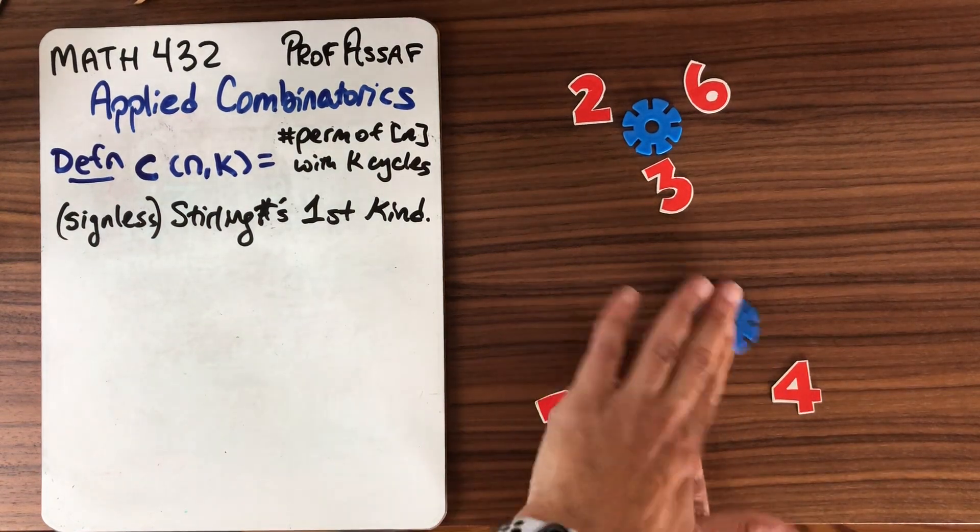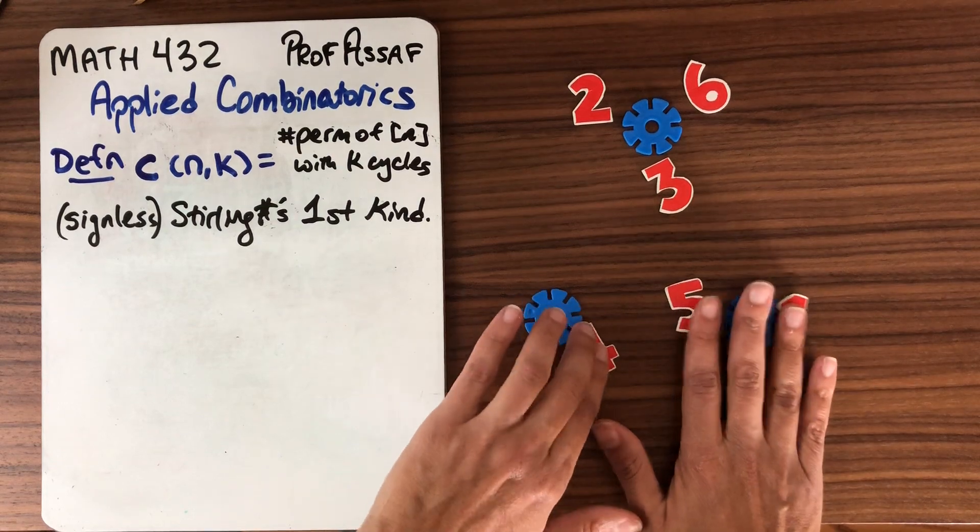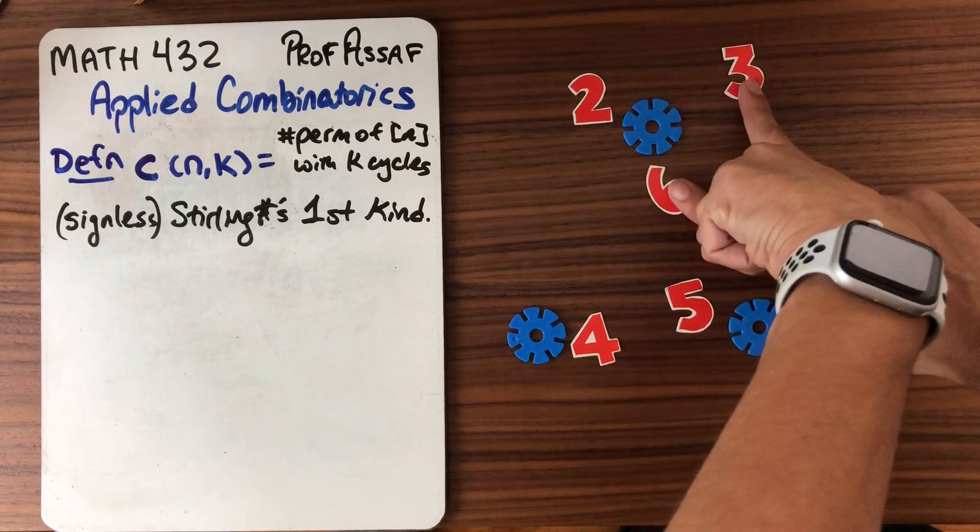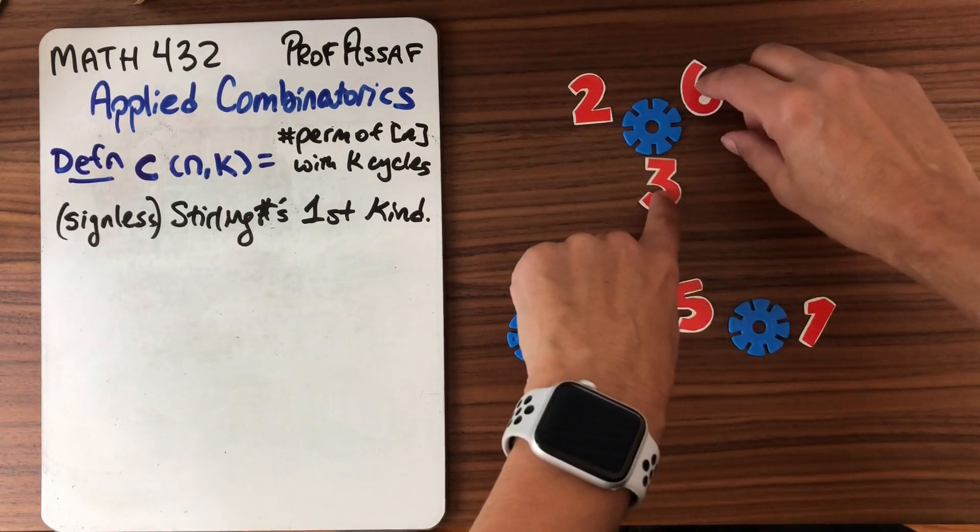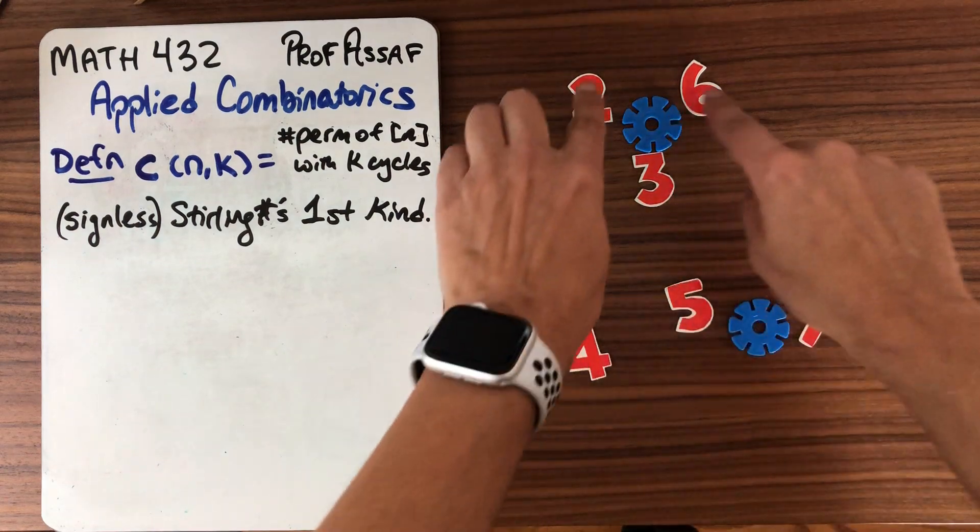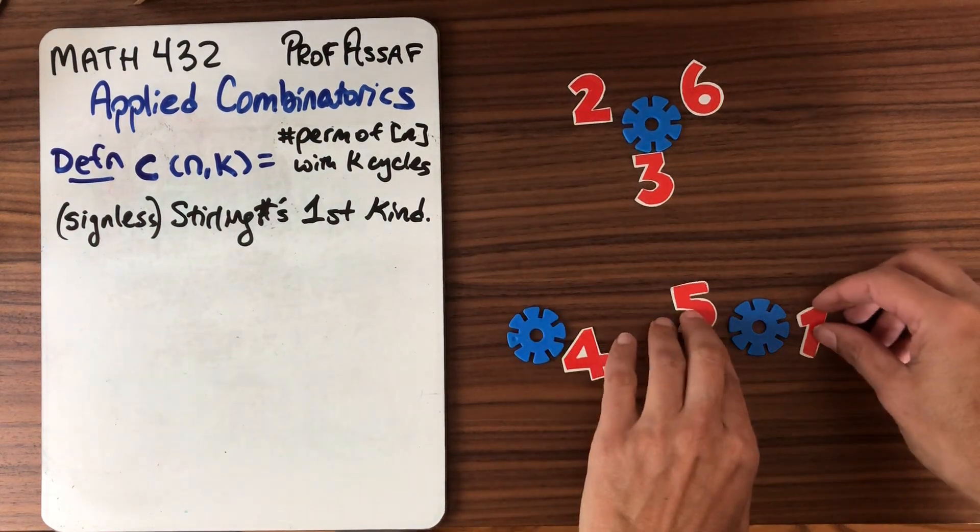So notice once again it doesn't matter the order in which I take the cycles. But the order the numbers appear within the cycle absolutely does. This is different from this. The orientation of the cycles really means that the order of the numbers matters. So these are different objects.